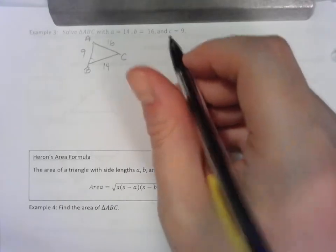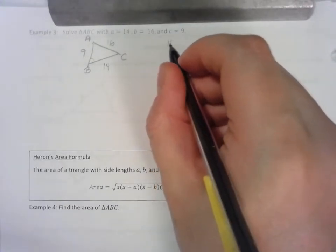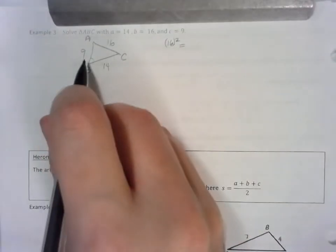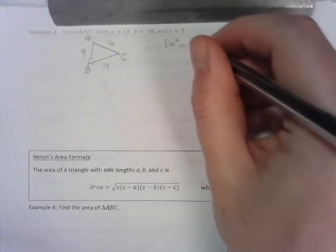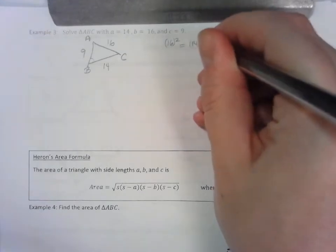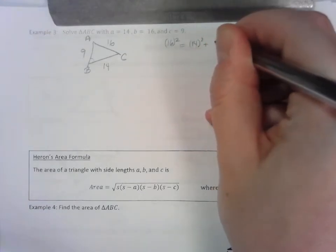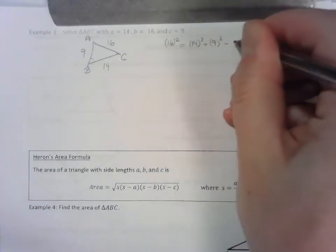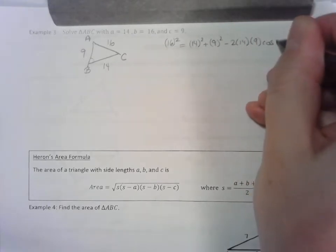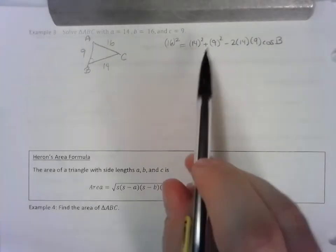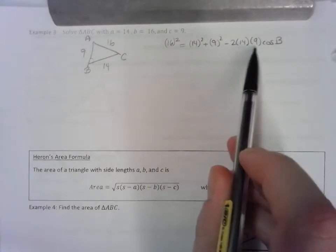We're going to set up the formula using b squared equals a squared plus c squared. So that's 14 squared plus 9 squared minus 2ac times the cosine of angle B.